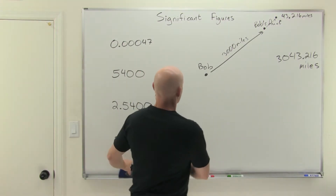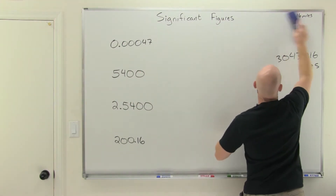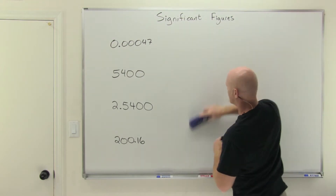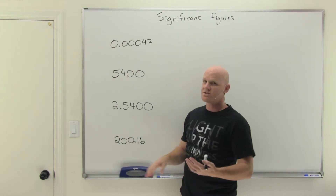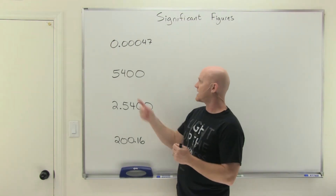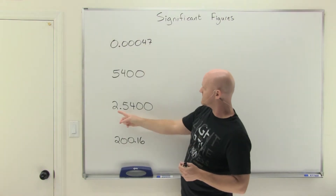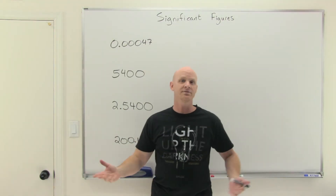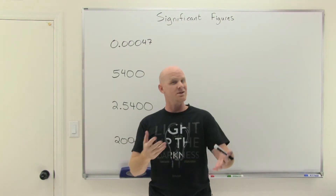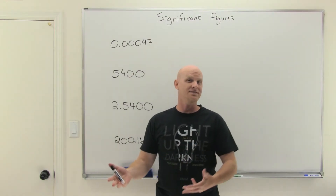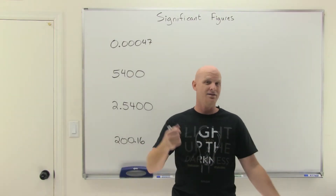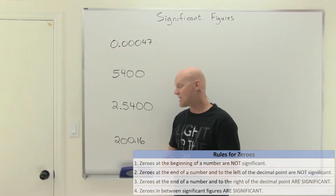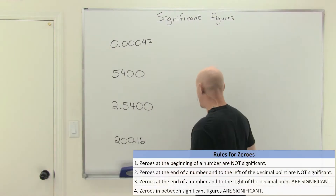Let's talk about the four rules — it all comes down to the zeros. Every digit that's not a zero, like a 5, 4, 7, 2, 1, or 6, is always significant. It all comes down to the zeros. Sometimes zeros are significant and sometimes they're not, and there are four rules to help you remember when they are and when they aren't.